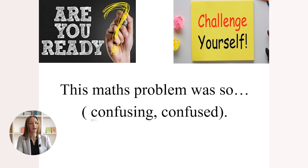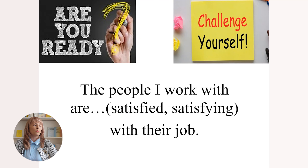Next: 'This maths problem was so confusing or confused.' Think — is this how I feel about the problem, or how the maths problem is described? Pause and underline. The answer is: 'This maths problem was so confusing.' If you have this answer, you have understood participle adjectives really well.